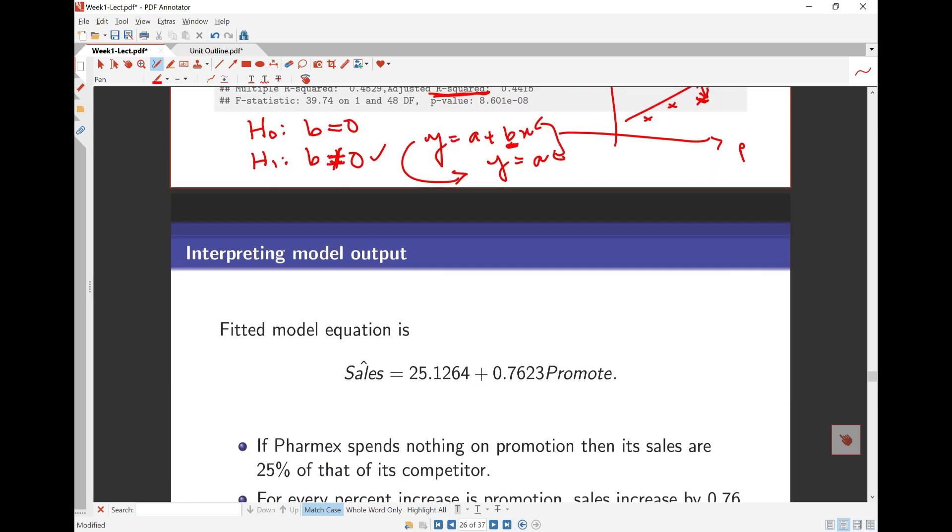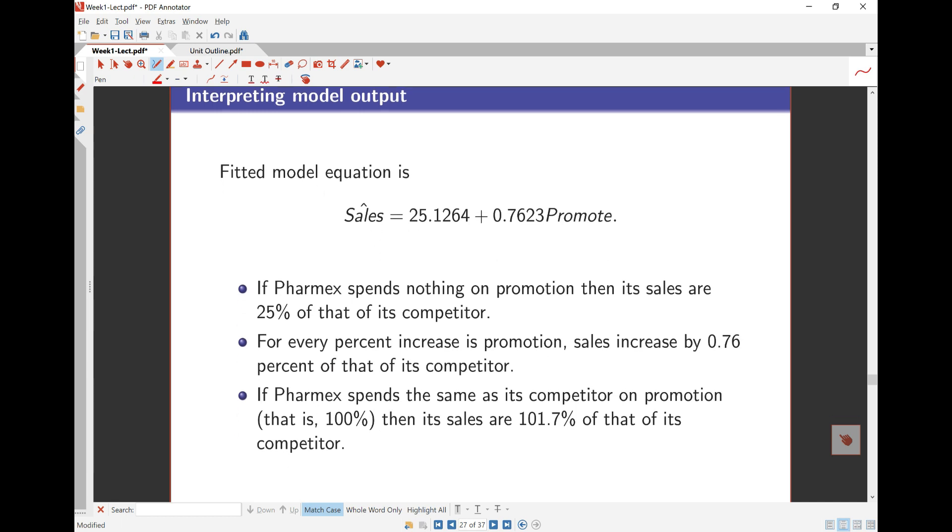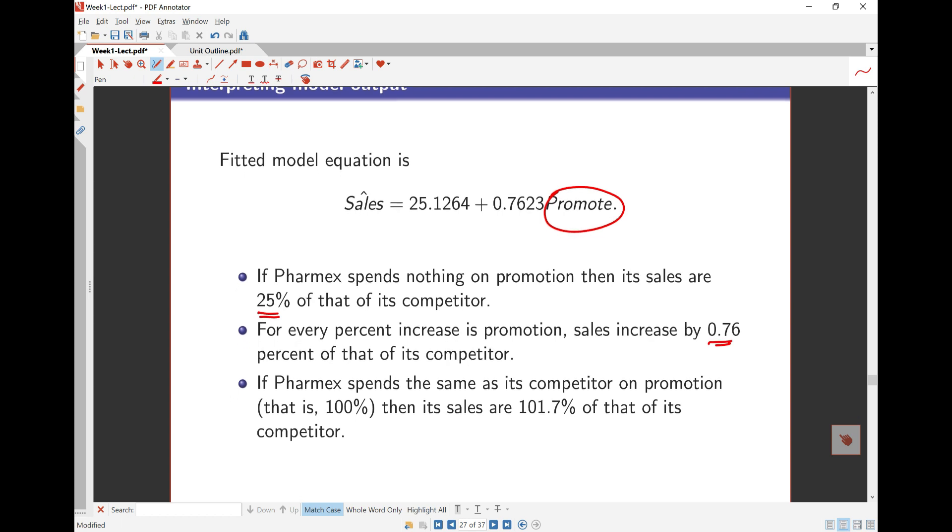So very quickly, I've said these things in the slides here. Then the fitted equation is sales equals 25.1264 plus 0.7623 times promote here. What it means is, if Pharmex spends nothing in promotions, if this is 0, then my sales are 25% of the competitor's sales. For every percent increase in promotion, if I increase it by 1%, then my sales increases by 0.76% of that of my competitor. And if I spend the same as my competitor, if I spend 100%, then my sales becomes 101%. In other words, I'm not doing so badly, because if I spend the same as my competitor, I'm getting a little more sales than he or this competitor is getting here.